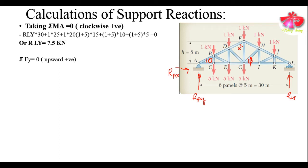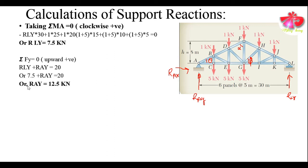Taking ΣF_Y = 0, we take all forces in the upward and downward directions and equate to zero. So R_LY + R_AY = 20 kN. Summing all the applied forces: there are three loads of 5 kN (total 15 kN) and six loads of 1 kN (total 6 kN) — wait, that gives 15 + 6 = 21... the total comes to 20 kN. Solving, R_AY = 12.5 kN. Also, taking ΣF_X = 0, the horizontal reaction comes out to be zero.